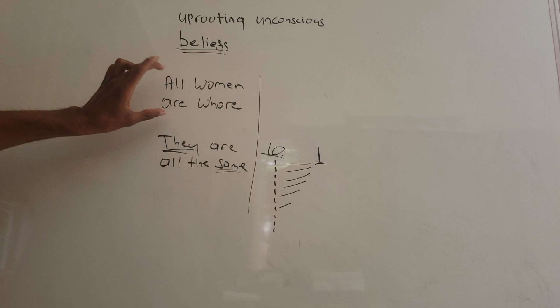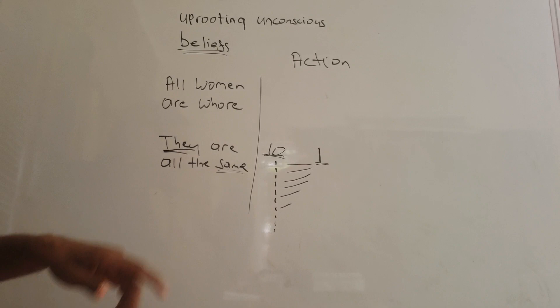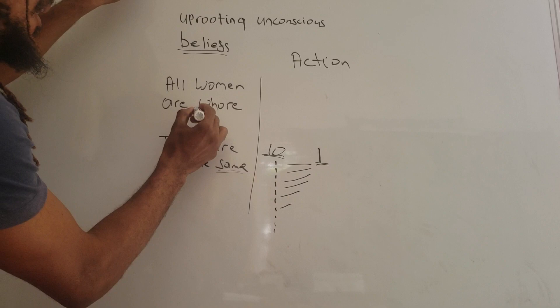What happens is we say all women are whores. What this belief does is it prompts us into actions. What are the actions that us men take when we hold on to this belief? We go towards women who are already this.